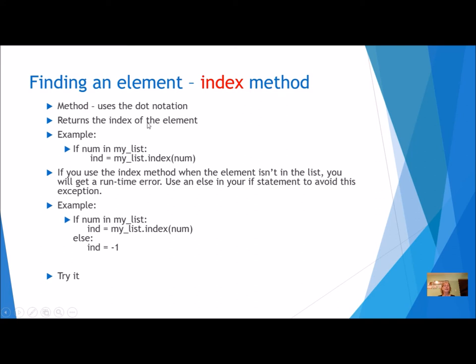So here's an example. First I'm going to check to see if it's in there. If num is in my_list, I can use the index method right here and it's going to return the position of where that number was found. If this number is in my list more than once, it's only going to return the first time that it finds it.